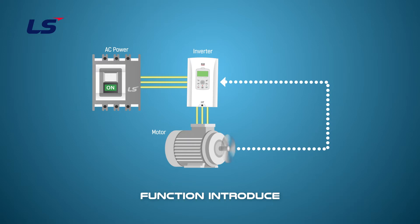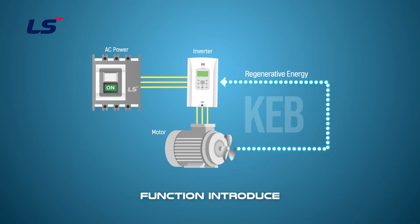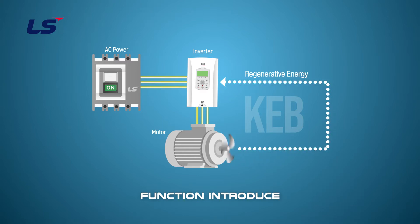The energy flowing into the inverter is called regenerative energy. The KEB function maintains the voltage of the DC power supply by using the regenerative energy of the inverter output frequency during the time when the input power is temporarily cut off or a power failure occurs. In other words, it can maintain operation by delaying the low voltage trip after the instantaneous power failure by using regenerative energy.